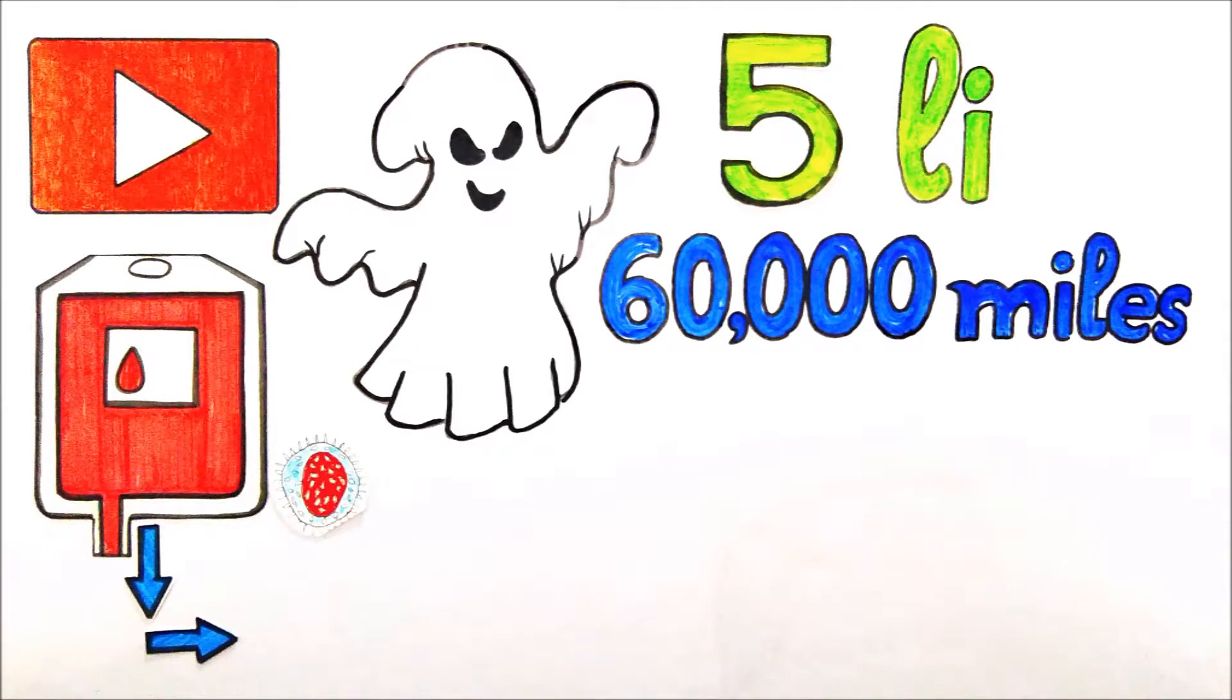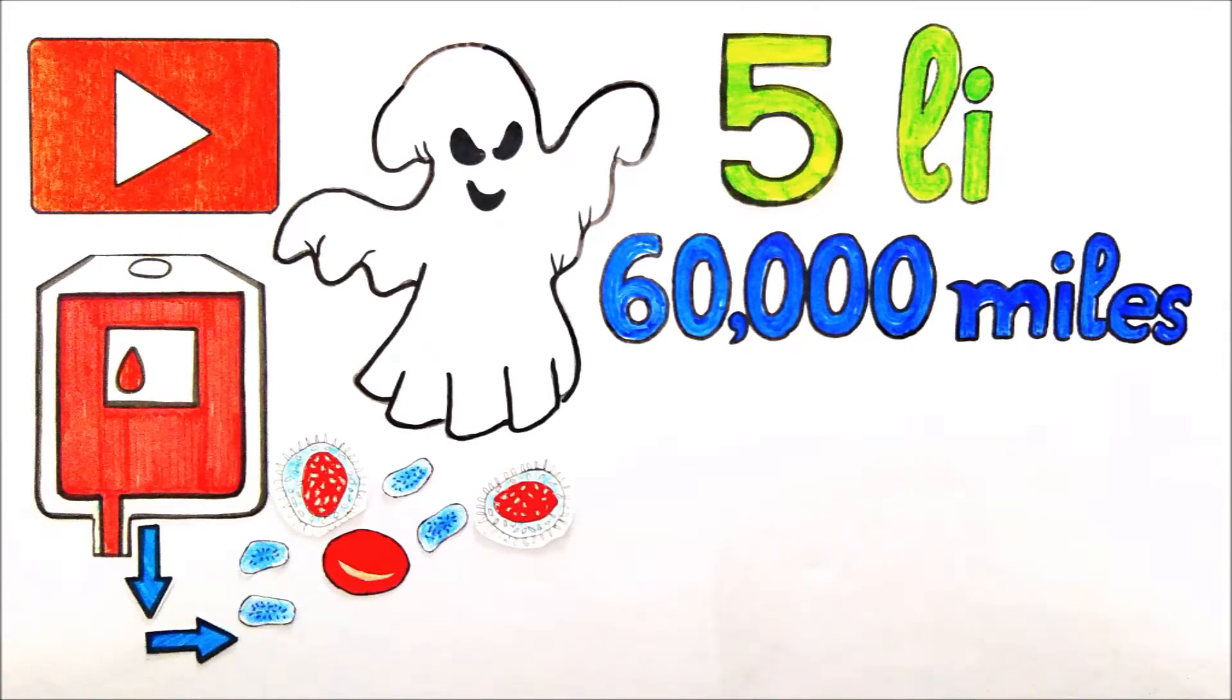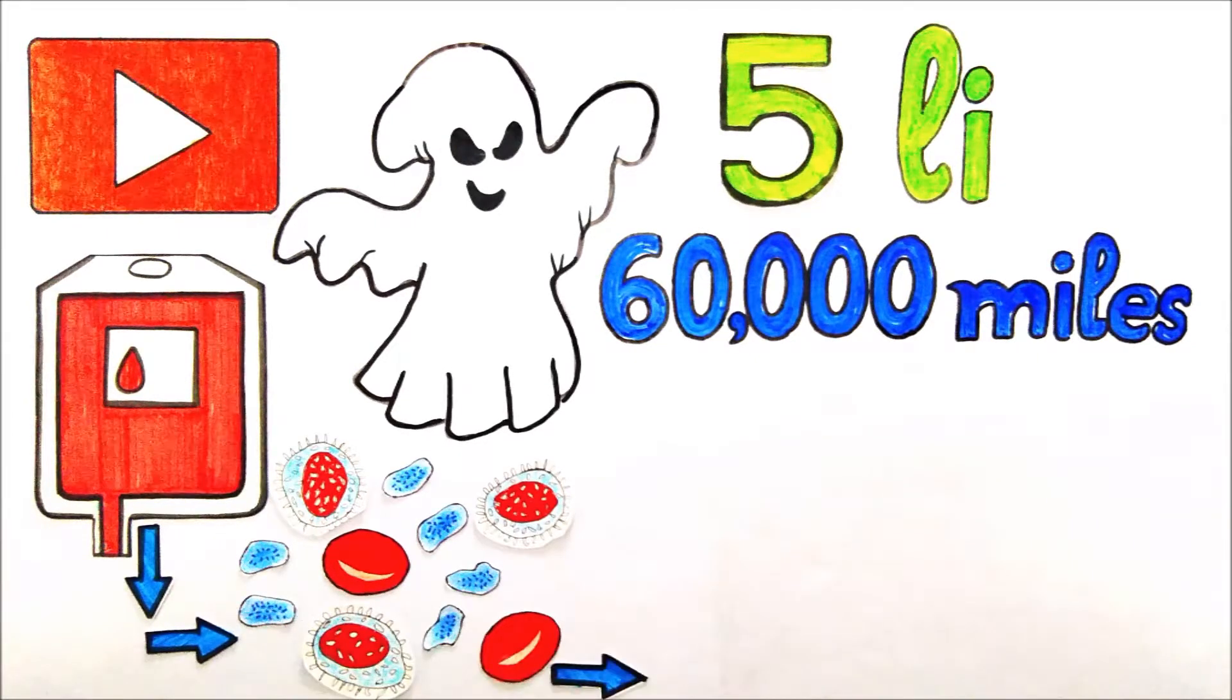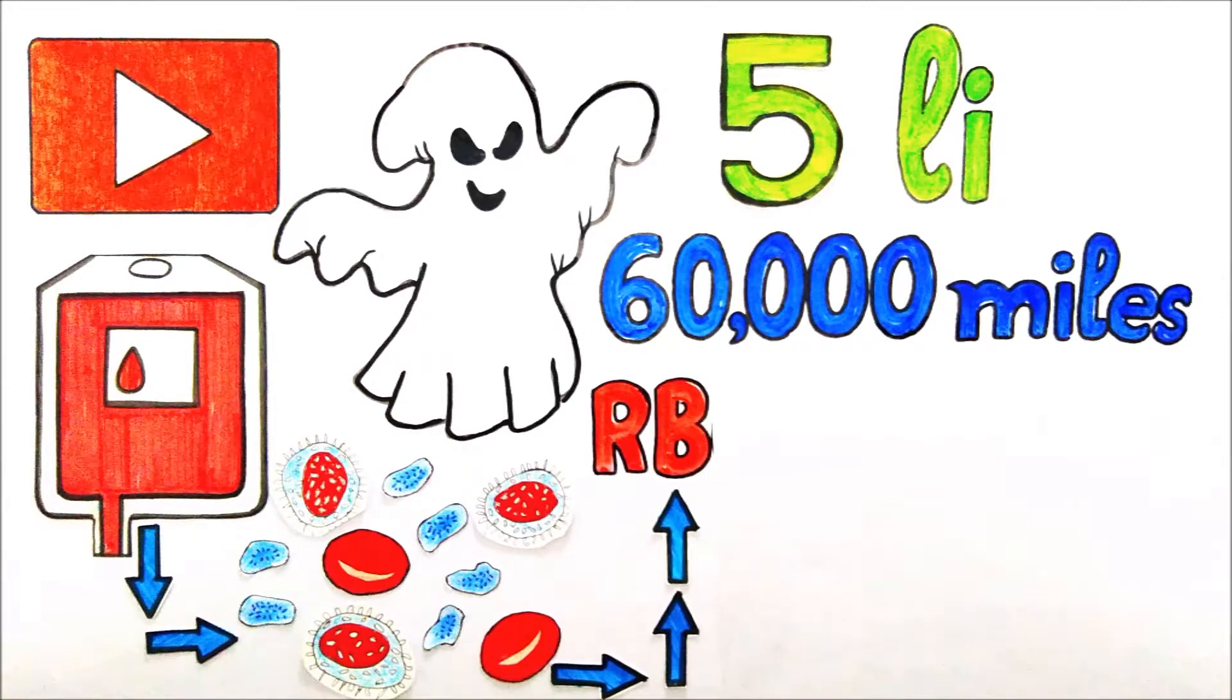Although the blood is made up of a lot of components, this red fluid gets its specific color from red blood corpuscles or RBCs.